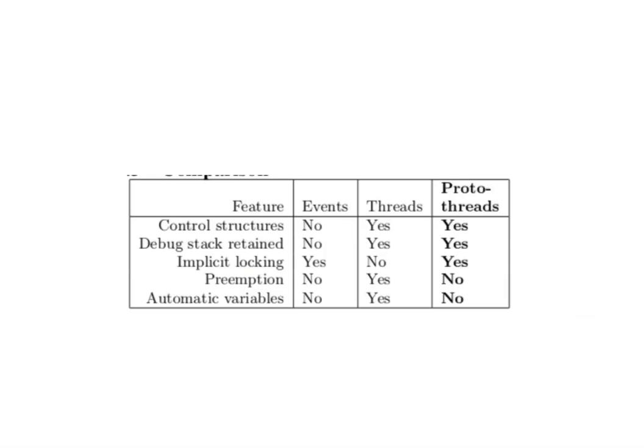Now you can see what are the different features. Control structures - in events there are no control structures, in threads yes, in proto threads also yes. Debug stack retained - in events no, threads yes and proto threads yes. Implicit locking - if you want to lock yourself implicitly, in events I can do that, but threading I cannot lock it because it has to be explicitly locked, but in proto thread I can lock.